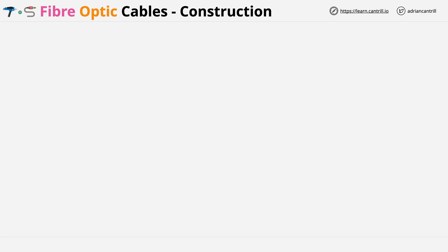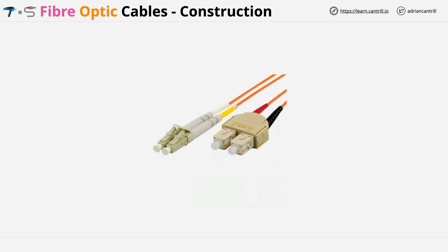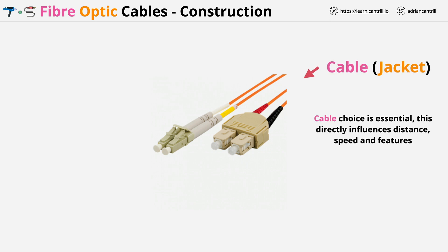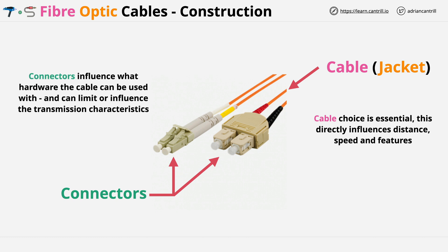Now in terms of physical makeup, this is what a typical fibre cable looks like externally. There are two different things that you need to think about, and this is common with any form of networking cable or any form of cable in general. There's the cable choice, which will influence the physical characteristics, so how fast data can be transferred and over what distances. Then you have the cable connectors, and these generally affect what the cable can be connected to, linked to physical ports on the networking equipment, but they can also influence some of the physical characteristics in terms of distance ability and speeds.